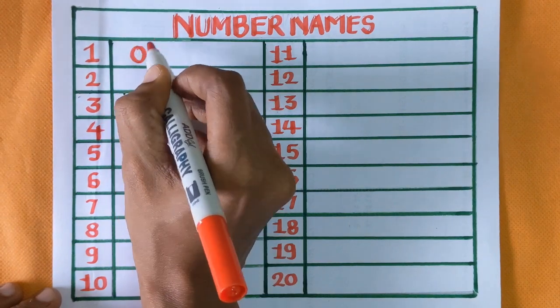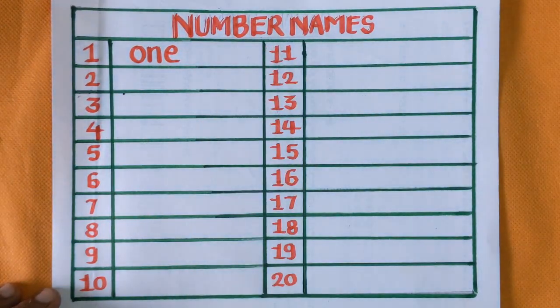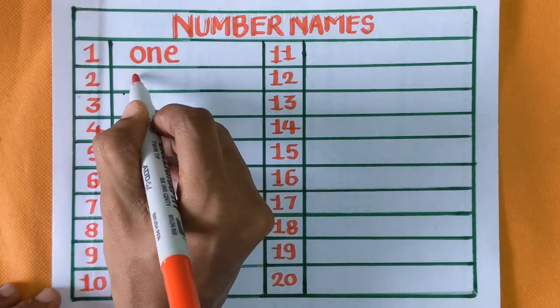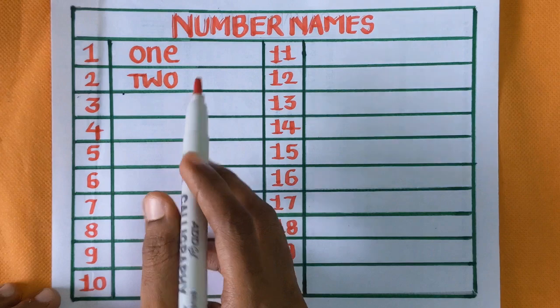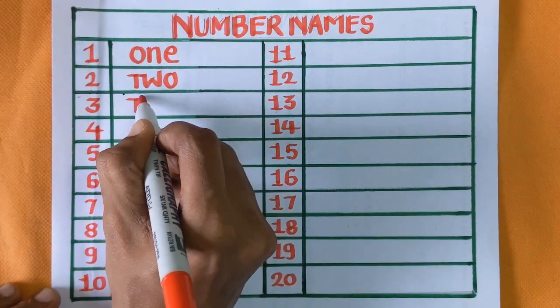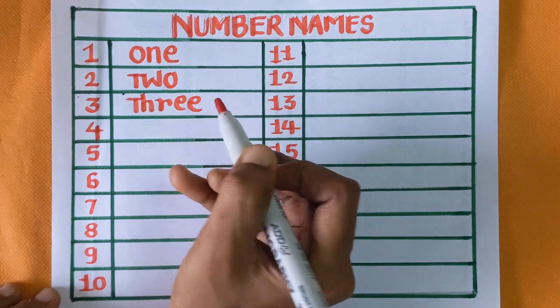O-N-E, one. Next is number two, T-W-O, two. Number three, T-H-R double E, three.